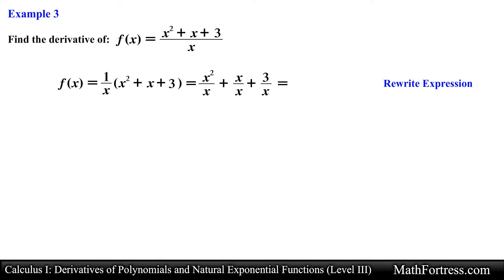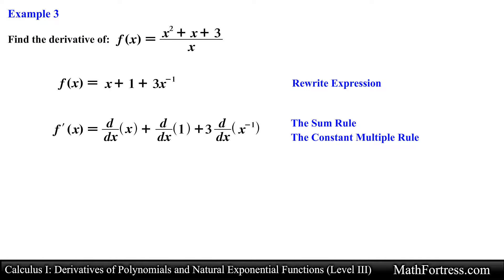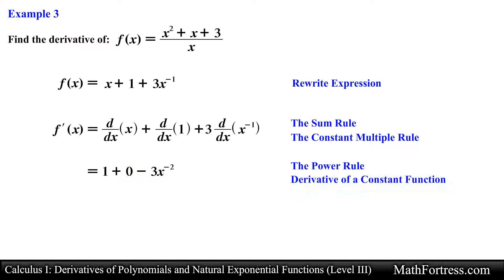Then we simplify each term, obtaining the derivative friendly form: f of x equals x plus 1 plus 3x raised to the power of negative 1. Now it is just a matter of applying the sum rule and the power rule to the first and third terms, and the derivative of a constant function to the second term. Lastly, we rewrite the expression, obtaining the final derivative which is equal to 1 minus 3 over x squared.